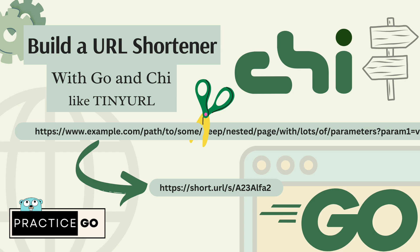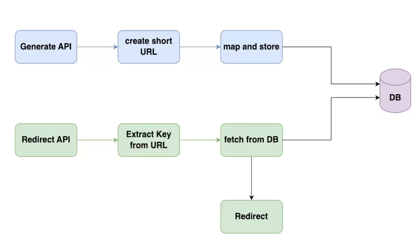In this video, we are going to build a URL shortener like TinyURL with Go and Chi as an HTTP router. This is going to be a very basic URL shortener service that creates a short alias URL of the long URL. So whenever you are hitting a short URL, it redirects to the long URL. In simple words, you can consider a short URL like a pointer which points to a long URL.